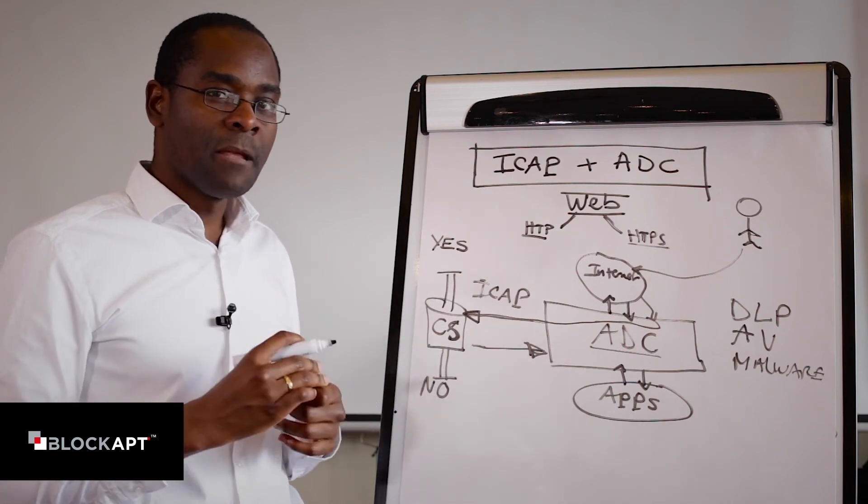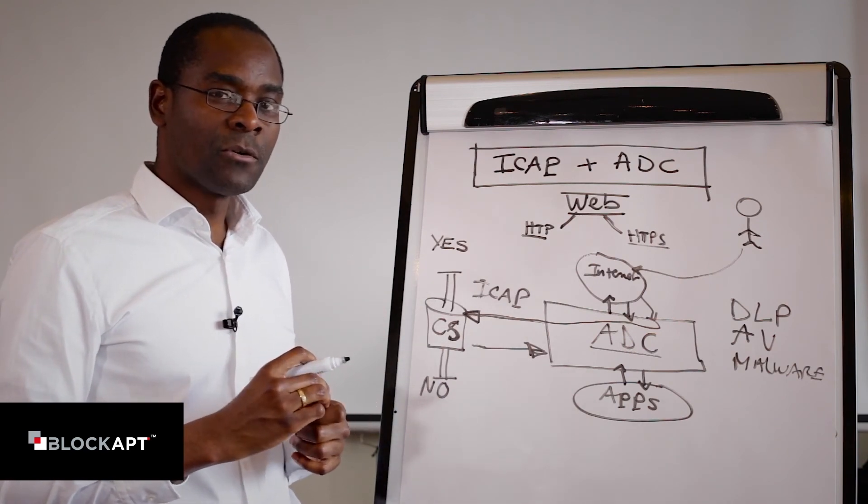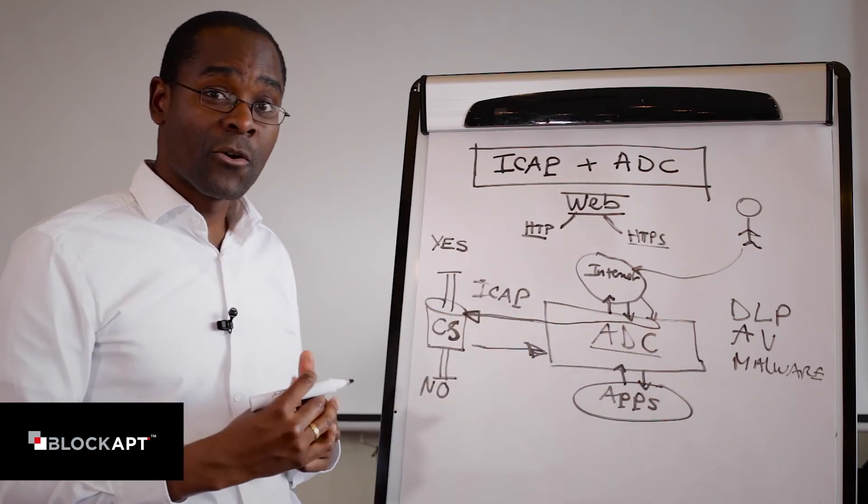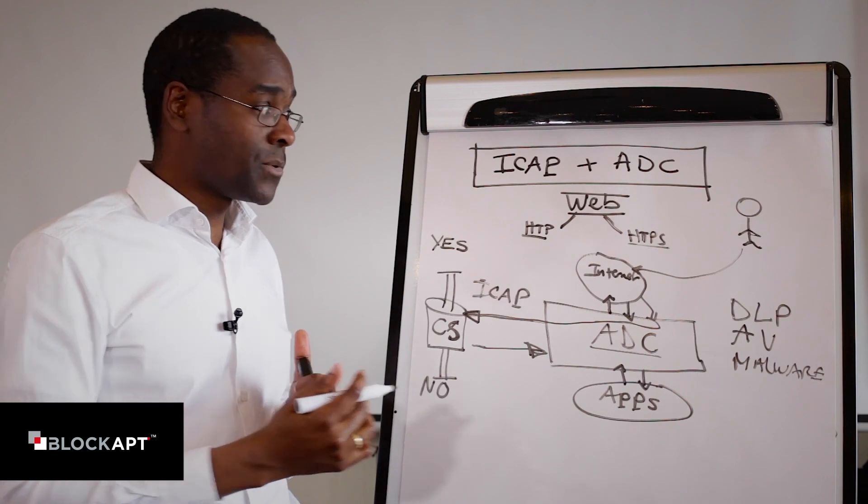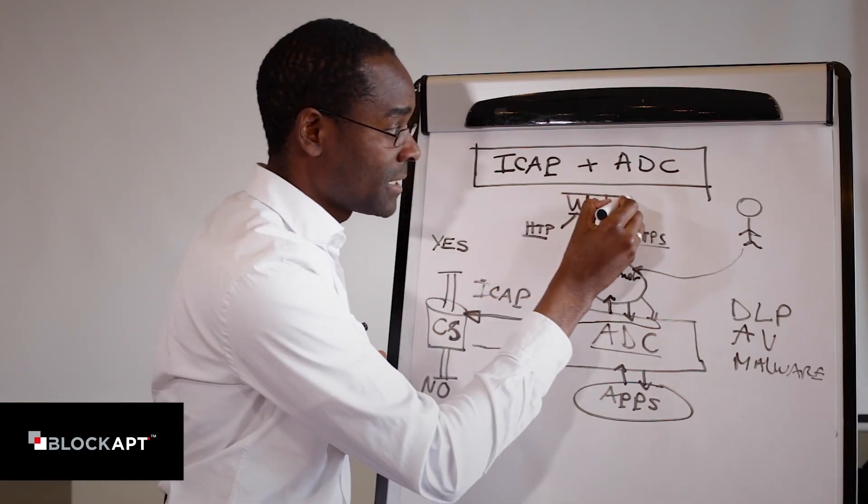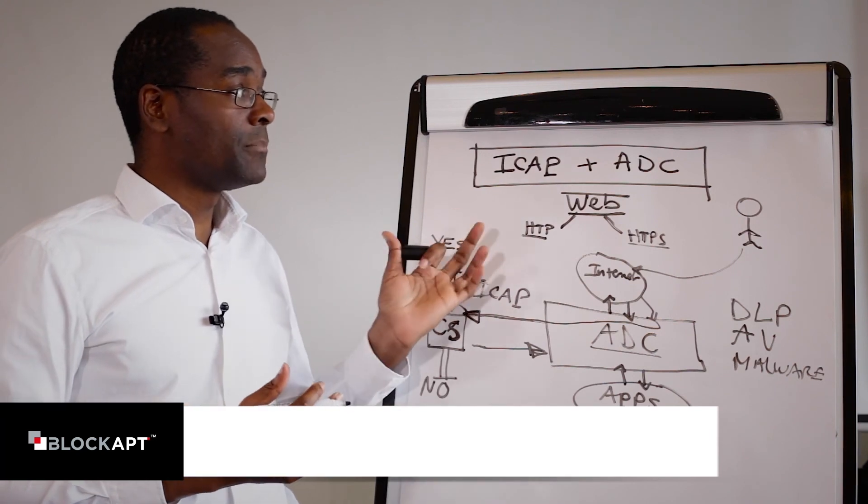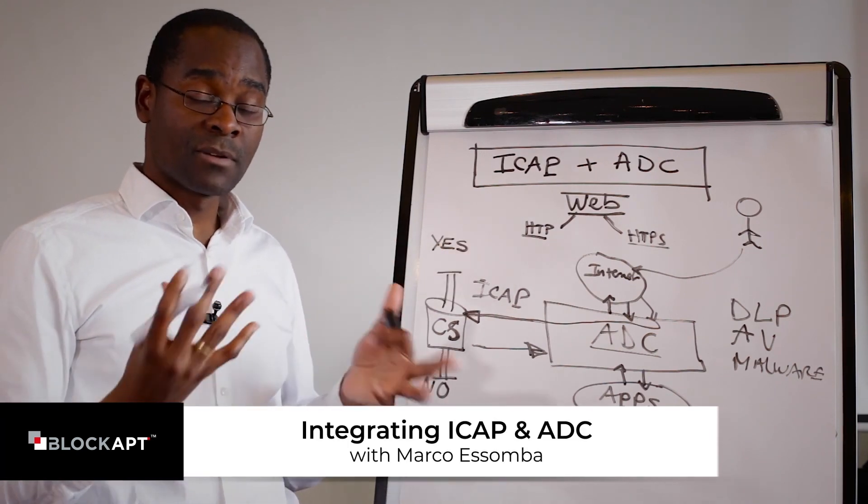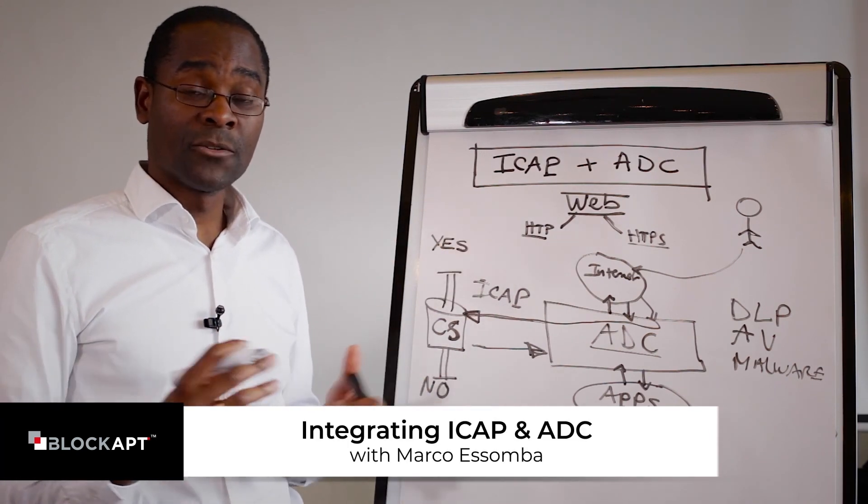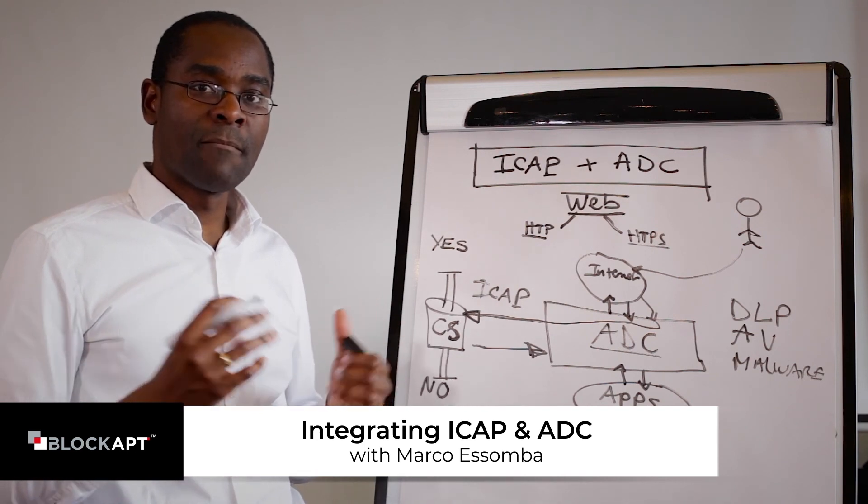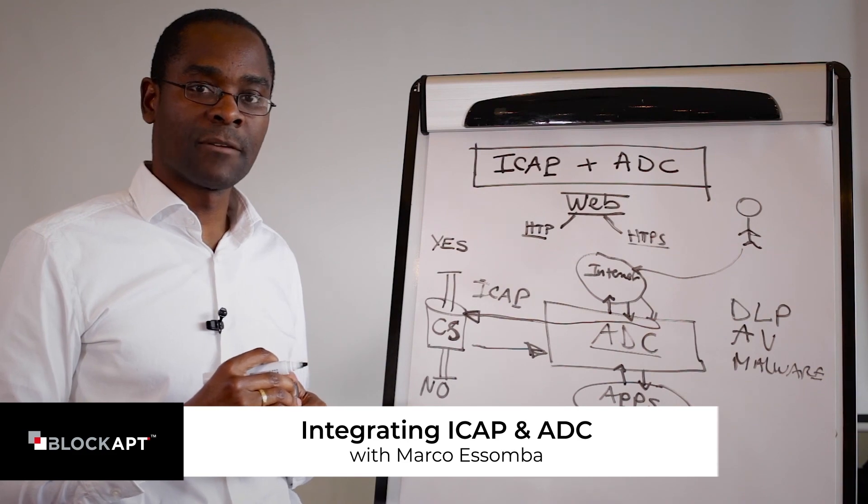So it's a fairly powerful protocol and when you combine it with your existing ADC, which has already seen all the traffic going in and out on your network and we're talking about web-based traffic in this case, you can see here we can have a powerful combination between the ICAP and the ADC to strengthen the security of your network and by doing so, protecting your client's data against all type of internet-based threat. Thank you.